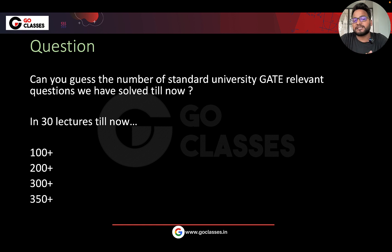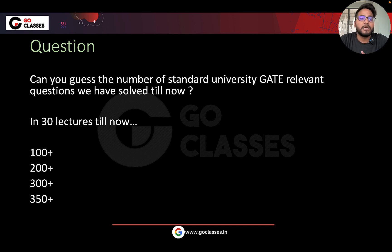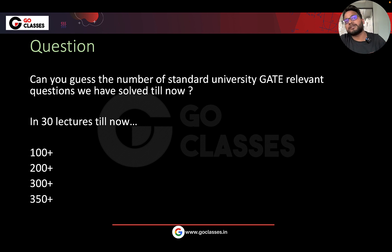More than 350 questions from standard universities — GATE DA relevant questions — which we have already solved in our lectures, and just 30 lectures have been completed. When it comes to GATE DA, students are a little worried about where to do practice, since machine learning seems to be a very hard, mathematically oriented subject. We have covered around 400 questions till now, which is a huge number. All the questions are standard, GATE DA relevant, and unique — it's not like we're just twisting one question and changing values and calling it the next question.